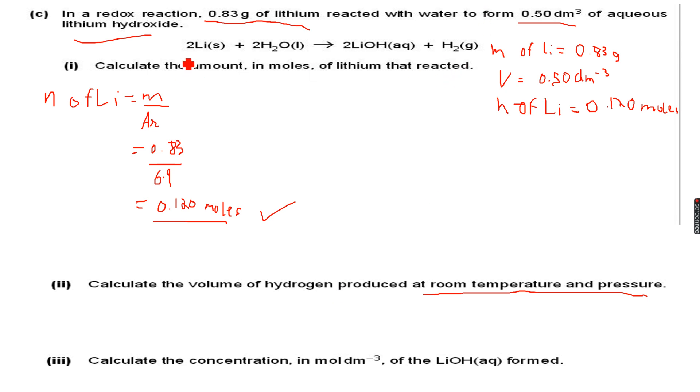This part asks us to calculate the volume of hydrogen gas produced at room temperature and pressure. First, let's see the ratios. The ratio between lithium and hydrogen is 2:1. This means 2 moles of lithium form 1 mole of hydrogen. So when we first calculate the number of moles of hydrogen, n of H₂...